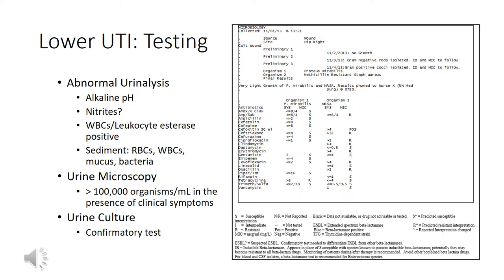A urine culture should be sent when the diagnosis is uncertain — so if a patient has fewer than two symptoms — or when there is treatment failure, or in the presence of additional risk factors such as an indwelling catheter, male gender, or females greater than 65 years of age.